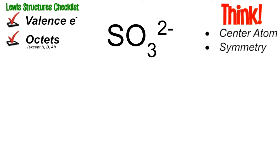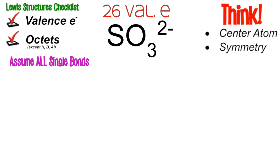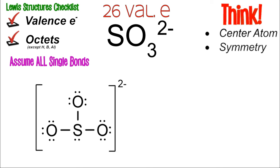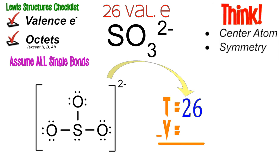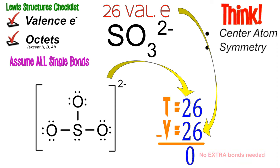Another ion: SO3 2-. Sulfur is 6 and oxygen is 6 times 3, plus two extra electrons from the charge, equaling 26 valence electrons. Assume single bonds, put S in the center with oxygens around it. Make sure the sulfur has an octet with those two extra electrons on it, and bracket the structure showing the negative two charge. Adding it all up: eight around each O plus two extra on S gives 26. This is a completed Lewis structure with no extra bonds needed.